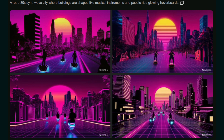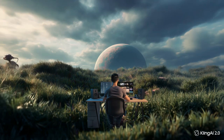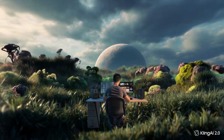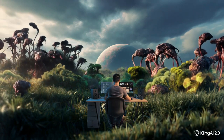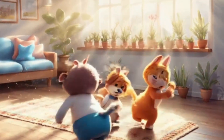Another prompt was a retro 80s synthwave city where buildings are shaped like musical instruments and people ride glowing hoverboards — all the images are looking seriously good. The last prompt was a peaceful zen garden floating in the middle of space, with a tree, koi fish swimming in mid-air, and tiny asteroids orbiting gently. Now you know much better Kling 2.0's comparison with other models, how it generates video, and that Colors 2.0 for image generation is fire.